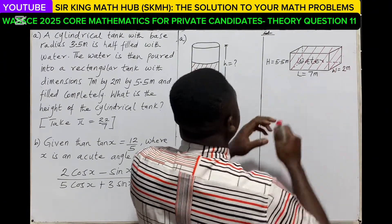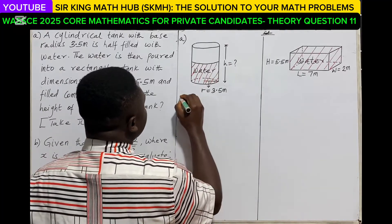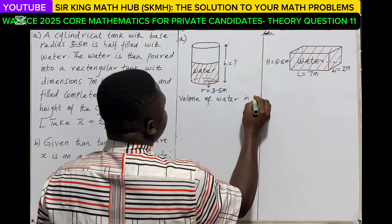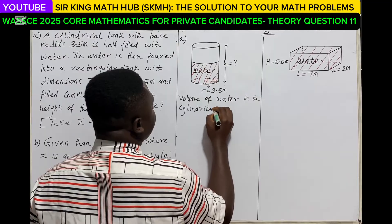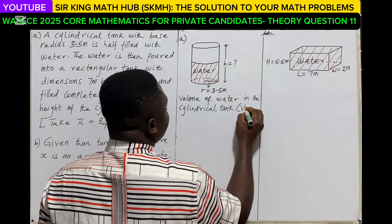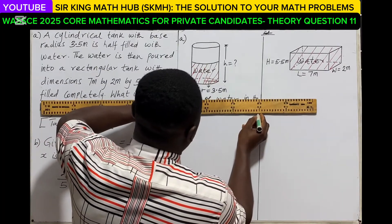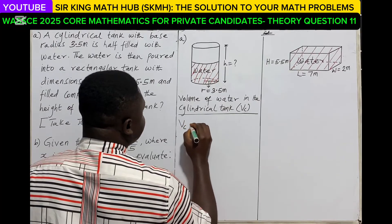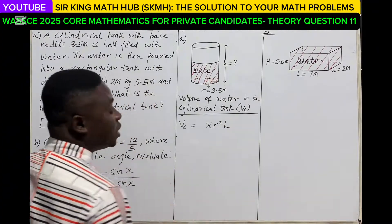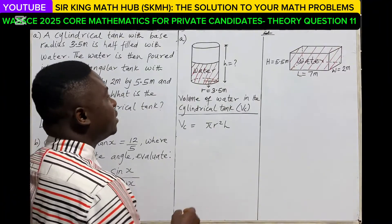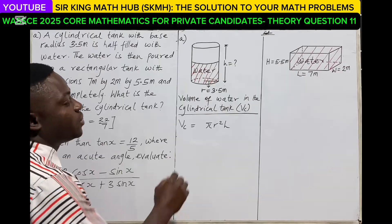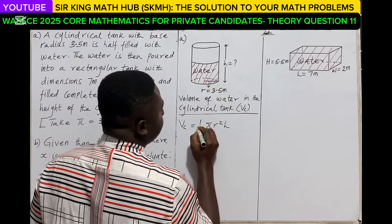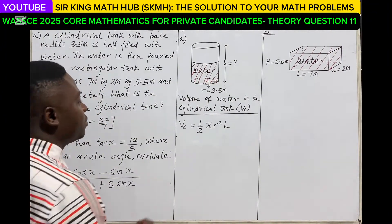Let's start calculating the volume of water in the cylindrical tank. The formula for the volume of a cylinder is πr²h, where r is the base radius and h is the height. Since the tank is half filled, the volume of water occupies half of the entire volume of the cylinder.